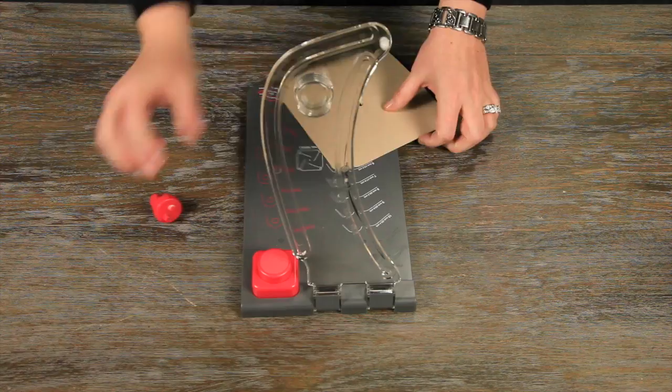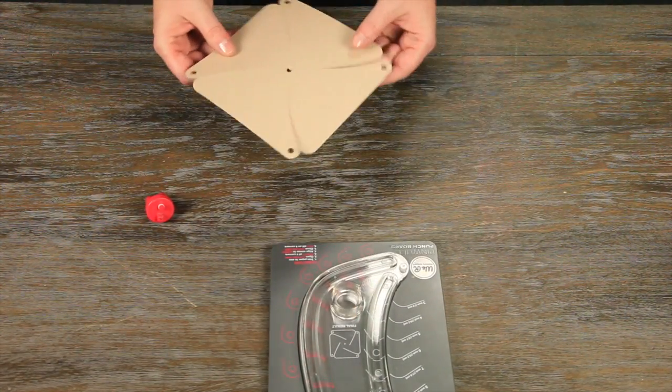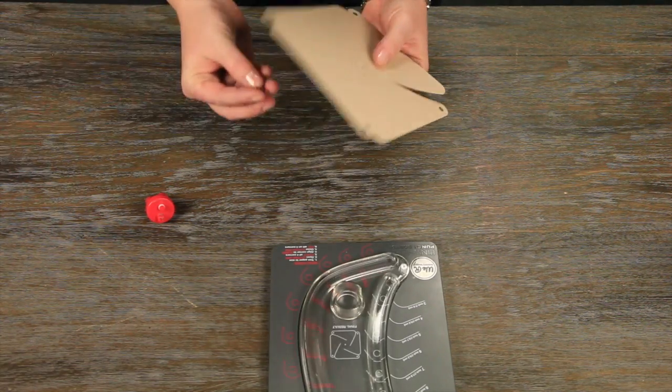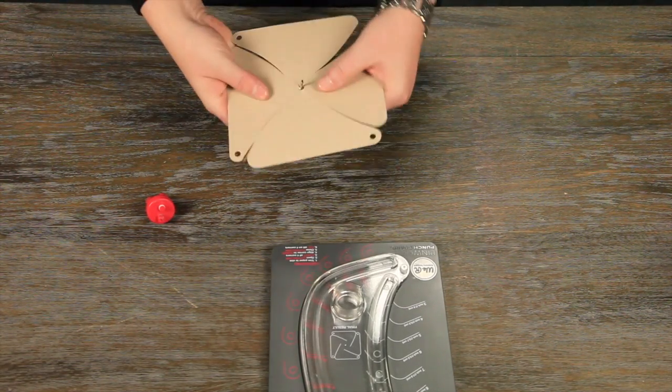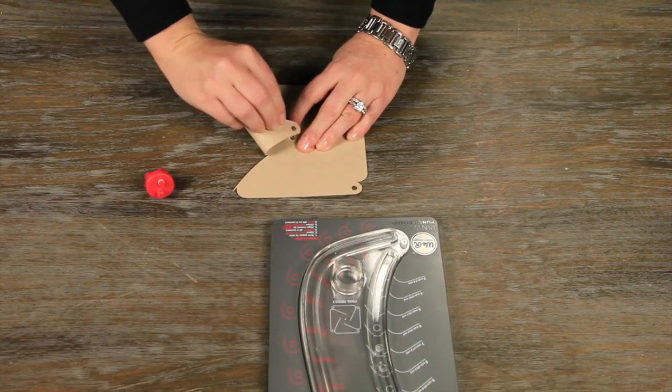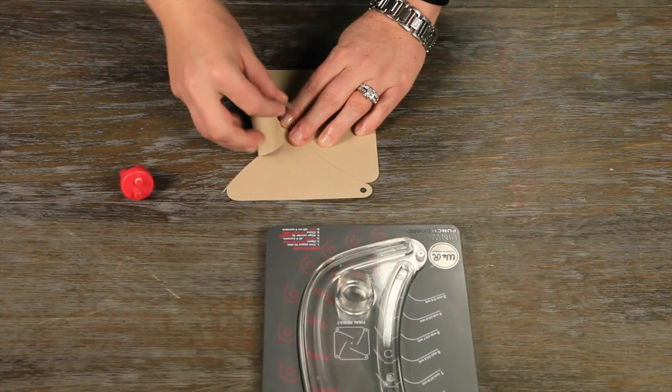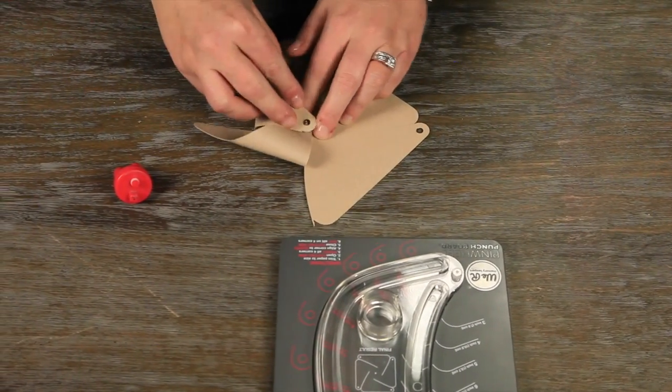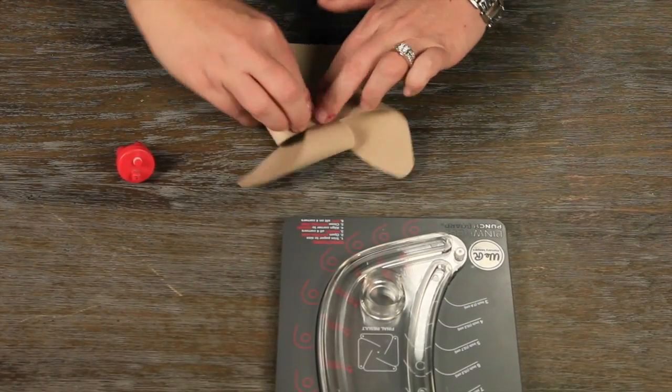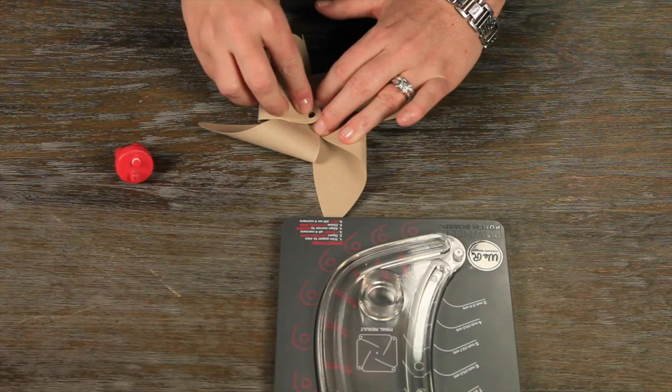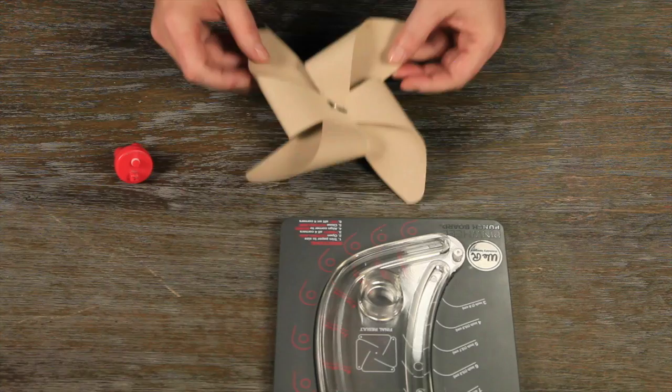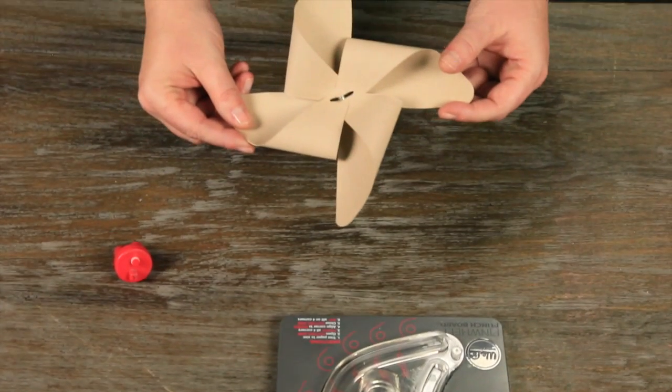Once that's done, you can push the tool away, and then you have this piece. I like to take the brad and put it through the center upside down, because then it's easier for me to put it on the table and put the holes on top of the brad. You just go all the way around until all the holes are inside the brad. Bend your brad down, and then you have this super cute pinwheel.